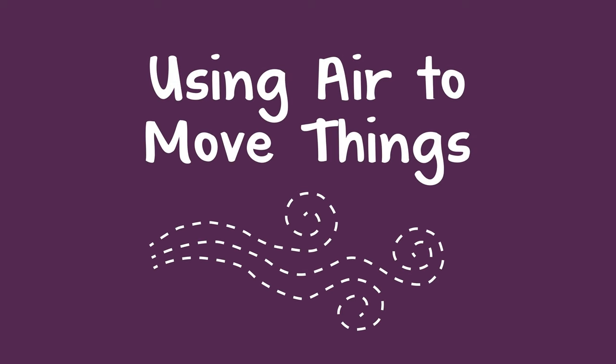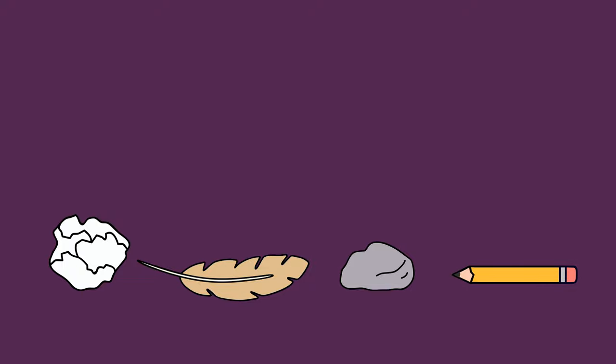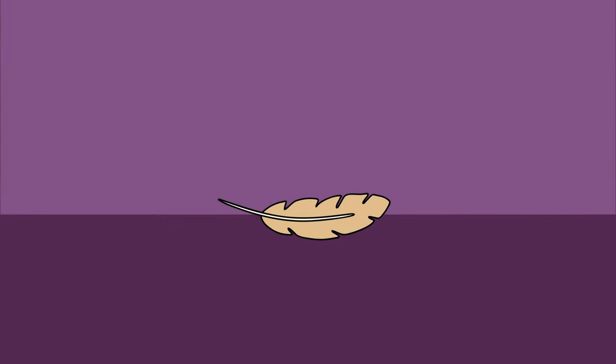Learning that we can use air to move things can be fun for a child. To start, you and the child can collect some small objects, like a crumpled piece of paper, a feather, a rock, or a pencil. Then they can see which ones they can move by blowing on them.